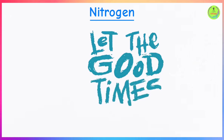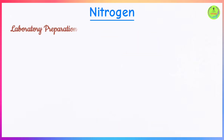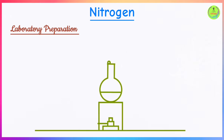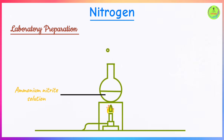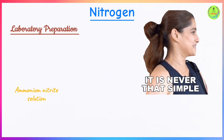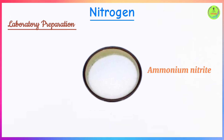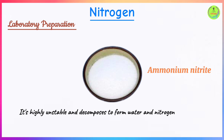For laboratory preparation of nitrogen gas, all you need is ammonium nitrite and heat. However, ammonium nitrite is not stored in the lab because it is quite unstable, so you need to freshly prepare ammonium nitrite in order to obtain nitrogen gas.